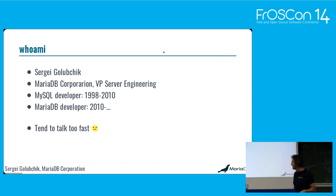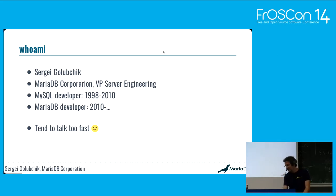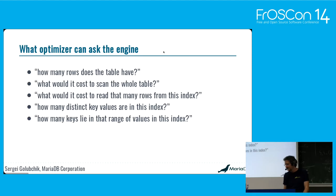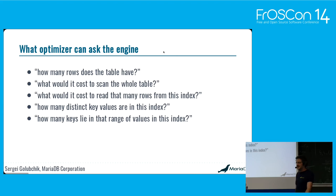I might start talking too fast — if that happens, just give me a shout and ask me to slow down. So, about the topic: what things does the optimizer need? What data, what statistics would the optimizer need to optimize a query?